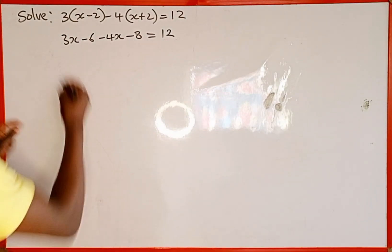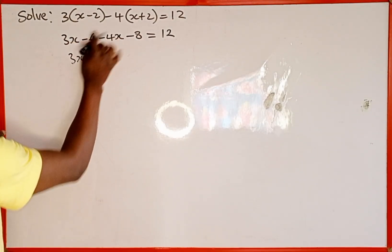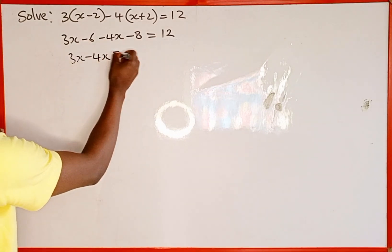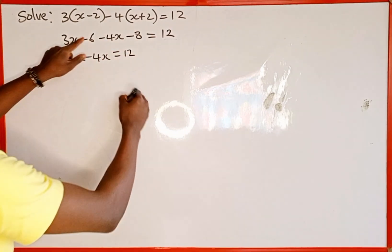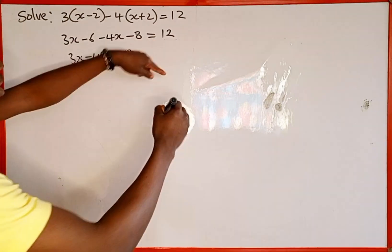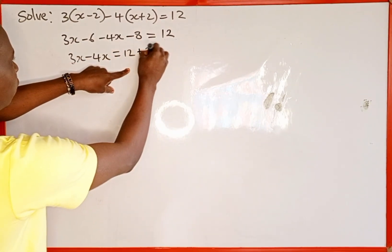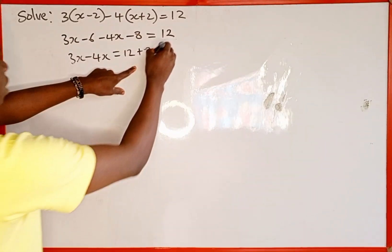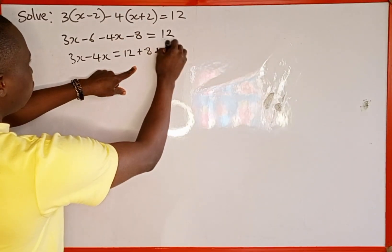Now let's combine the like terms. We have 3x here and we have negative 4x which is equal to 12. Then we take this 8 to the right-hand side, it's going to change to positive 8. Then also we take this negative 6 to the right-hand side, it's going to change to positive 6.